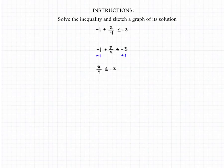Then we can multiply both sides of the inequality by 4 to get rid of that denominator, which will give us X is less than or equal to negative 8. From here to graph it, we have to ask ourselves two questions.